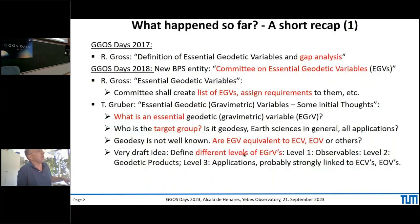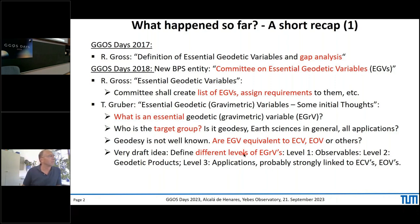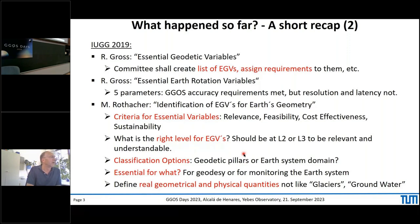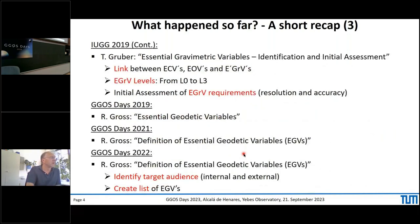I summarized what happened so far — I won't go through all items, just wanted to include them here. Roughly six years ago, Richard first started talking about essential geodetic variables, at least as far as I know. It continued at GGOS Days 2018, and a major meeting was IUGG 2019 in Montreal, where Richard presented, Marcus Rothacher provided his ideas, and I added something about the gravimetry part. In the recent GGOS Days there were additional presentations, always more or less addressing similar questions — those shown here in red.